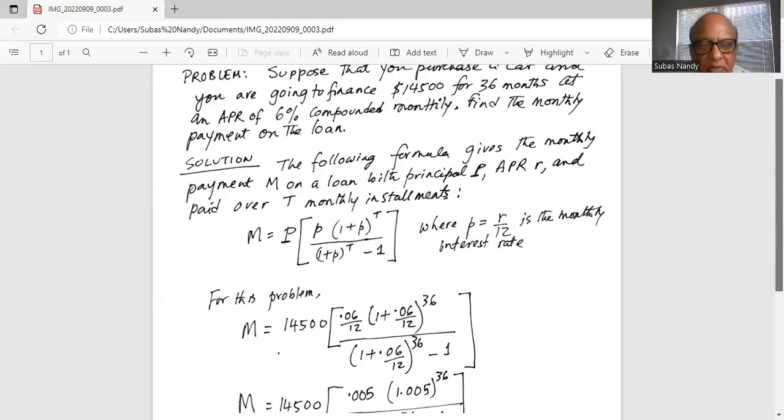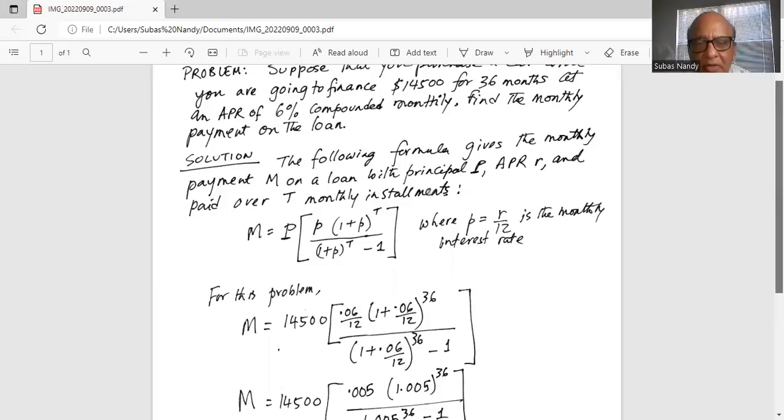M is equal to P multiplied by, in parentheses, small p multiplied by 1 plus small p raised to the power of T, divided by 1 plus small p raised to the power of T minus 1.